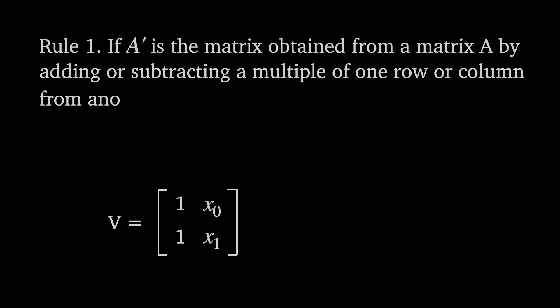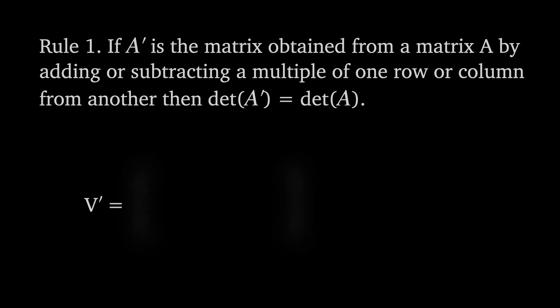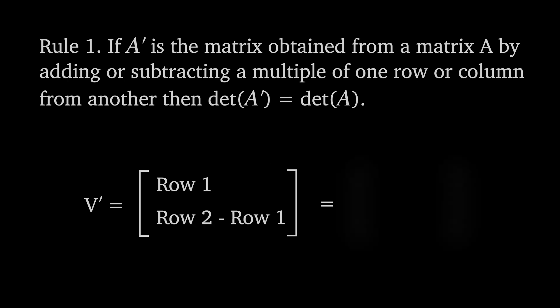Rule 1: if A' is a matrix obtained from matrix A by adding or subtracting a multiple of one row or column to another then the determinant of A' is equal to the determinant of A. In our Vandermonde matrix let the first row containing 1 and x sub 0 be row 1 and the second row containing 1 and x sub 1 be row 2. Subtracting row 1 from row 2 leaves us with the matrix 1, x sub 0, 0 and x sub 1 minus x sub 0. Feel free to check the determinant is still x sub 1 minus x sub 0.